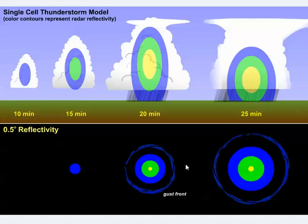The bottom panel shows a corresponding time sequence of idealized radar base reflectivities, with the observer looking down on top of the single-cell storm.